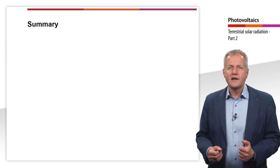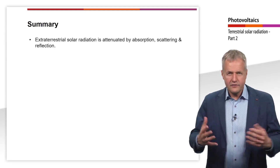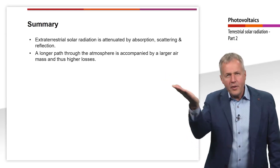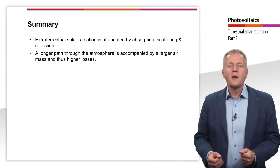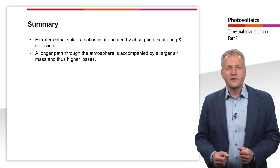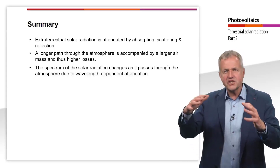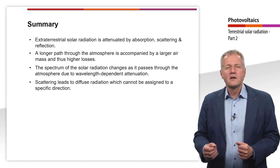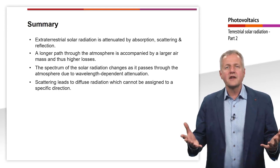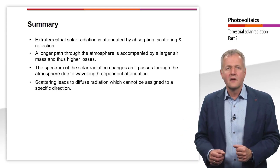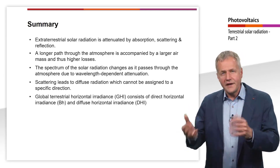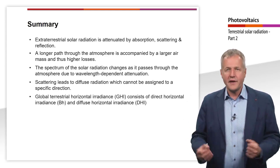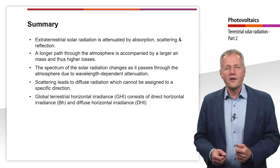The most important takeaways of this teaching unit are: extraterrestrial solar radiation is attenuated by absorption, scattering, and reflection; a longer path through the atmosphere corresponds to a larger air mass and thus higher losses; the spectrum of solar radiation changes as it passes through the atmosphere due to wavelength-dependent attenuation; scattering leads to diffuse radiation, which cannot be assigned to a specific direction; and global terrestrial horizontal irradiance consists of direct horizontal irradiance and diffuse horizontal irradiance. Thank you for your attention.